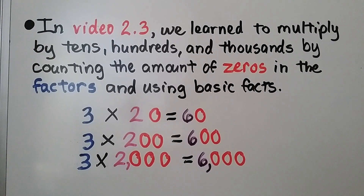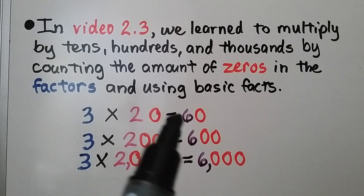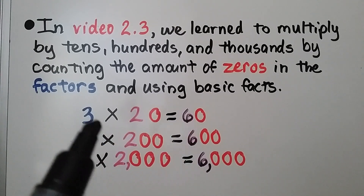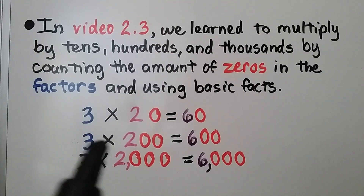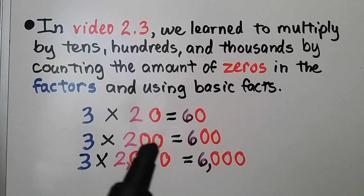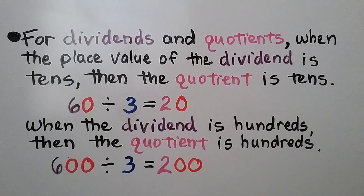In lesson 2.3 we learned to multiply by tens, hundreds, and thousands by counting the zeros in the factors and using basic facts. For example, 3 times 2 is 6, so 3 times 20 is 60. For 3 times 200, the basic fact is still 3 times 2 equals 6, but with two zeros in the factor, we get two zeros in the product. The same applies to 3 times 2000, giving three zeros.